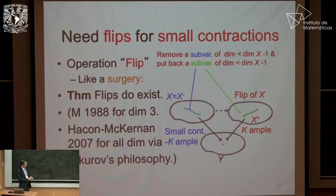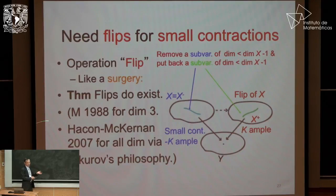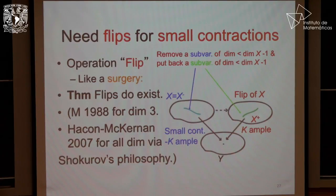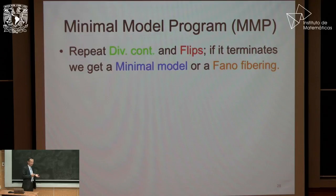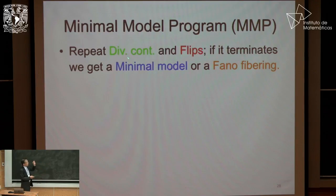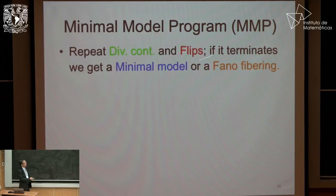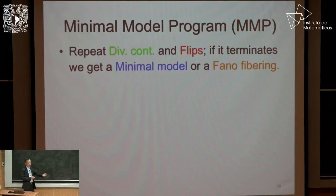So here the Minimal Model Program is the following: we start with an algebraic variety and ask if there is an extremal ray. If there is not, it's a minimal model by definition. If there is an extremal ray, there are a few cases: either a divisorial contraction, or some global structure, or a flipping small contraction. In the case of a small contraction, since the singularity becomes bad, we replace it by its flip, then we can continue the program.